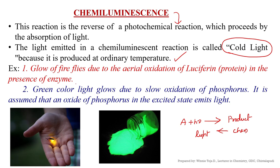Examples of chemiluminescence reactions include the glow of fireflies. The reason behind this emission of light by fireflies is due to the aerial oxidation of luciferin protein in the presence of enzymes. Another example is a green color light glow due to slow oxidation of phosphorus. These two are examples of chemiluminescence.